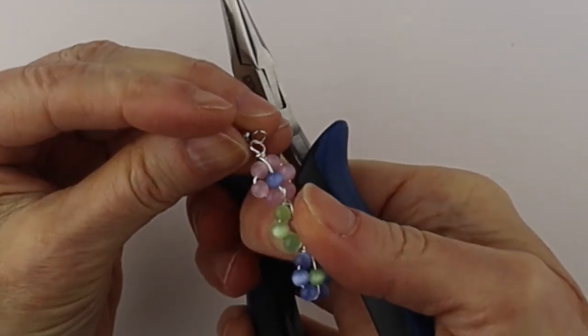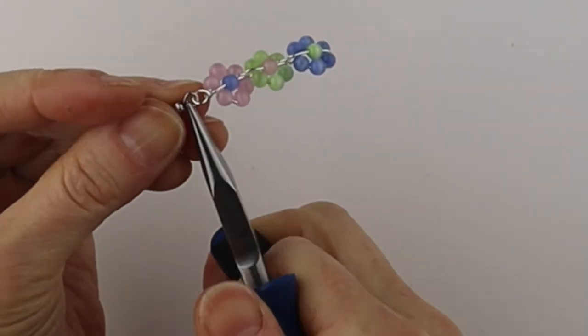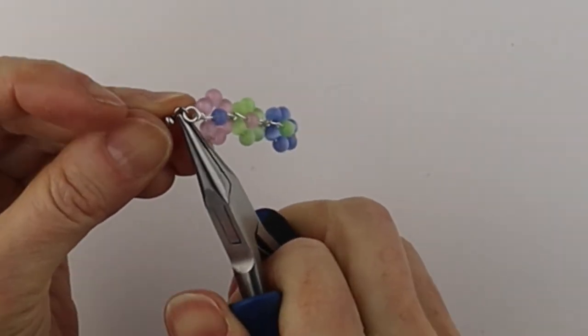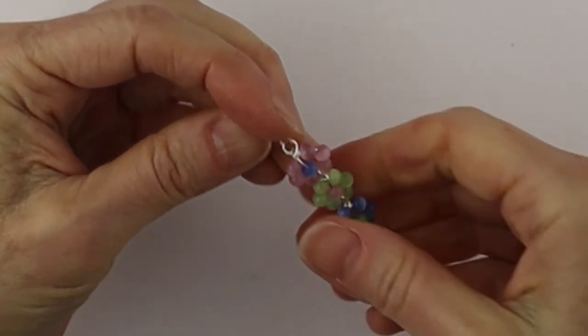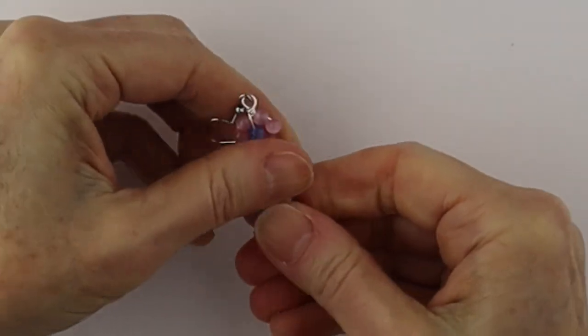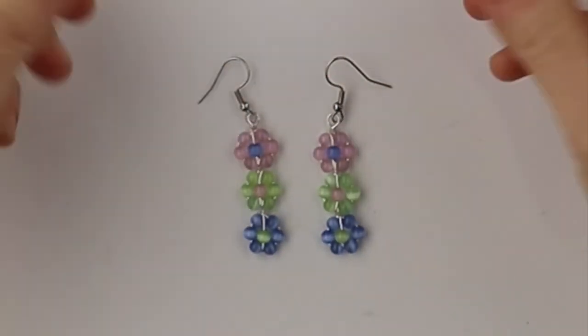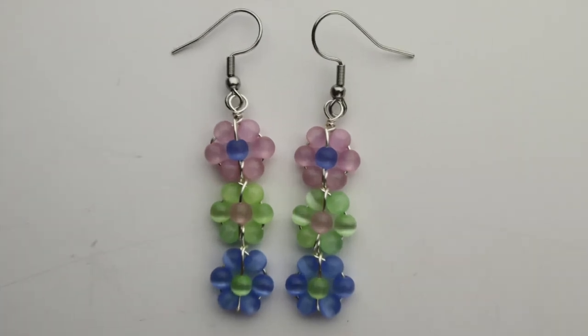Take an earring hook. I use the surgical steel earring hooks. Close it up and then just do any adjusting that you need to do, and there are your beautiful triple flower earrings.